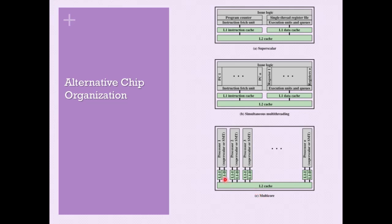In the multi-core processor, each processing element — processor 1, 2, 3, up to L — has its own dedicated L1I (L1 instruction cache) and L1D (L1 data cache). Processor 1, 2, and 3 each have their own dedicated L1 cache. Internally, each processor can itself be of superscalar or SMT architecture. Multi-core computers have different cores working in parallel whenever parallel operations need to be executed.